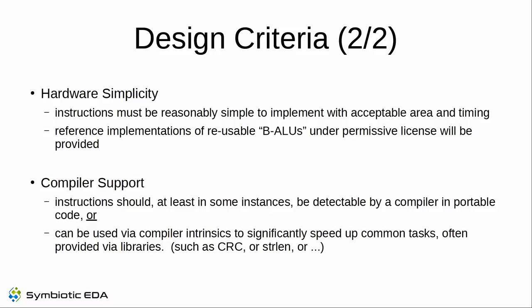Where possible, we want hardware simplicity — we don't want super-instructions that solve all problems but can't realistically fit in a real-world processor. We also want instructions that a compiler can infer, so that at least in some use cases the compiler can detect a pattern and replace it with the new instruction. This way we get speed-ups on existing C code, not only on code that is hand-optimized for our extension.